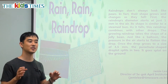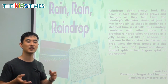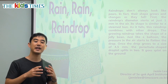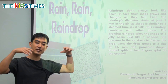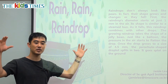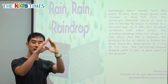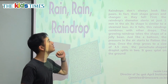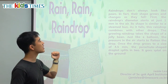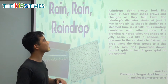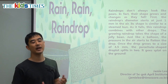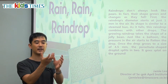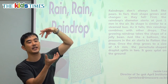We're not talking about just rain — we're talking about the shape of one single raindrop and how it moves in the air. Raindrops don't always look like pears. A pear is like a teardrop shape — very fat at the bottom and very skinny at the top.